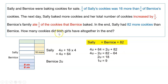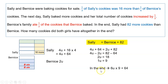The math question asks for how many cookies did both girls have altogether in the end. Take a count: one, two, three, four, five, six units — and 64 over here. So 6 units times 9, plus 64, will give you a total of 118 cookies.